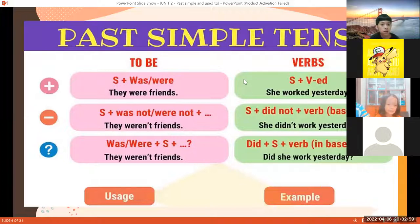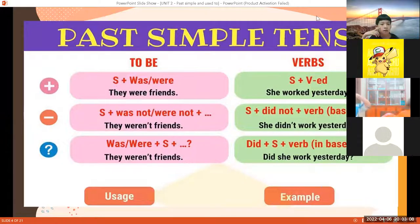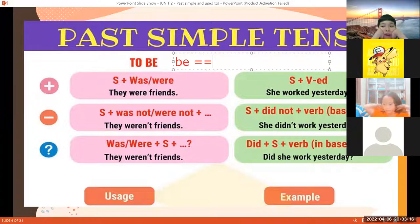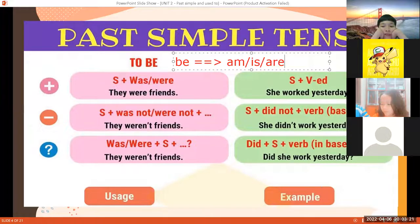Cái này để mình áp dụng nè. Đầu tiên, người ta sẽ chia làm 2 cột: cột về động từ to be. Động từ be là gì? Tụi con còn nhớ không? Be là một cái động từ rất là đặc biệt. Khi mà ở thì hiện tại, tụi con sẽ sử dụng be — nó sẽ được đổi thành am, is, are!